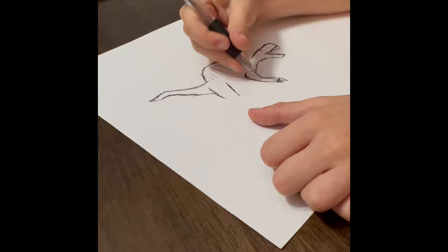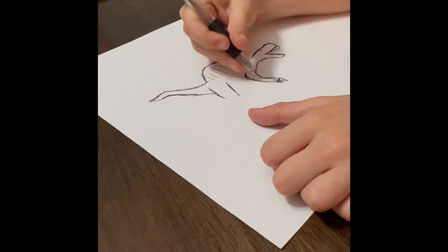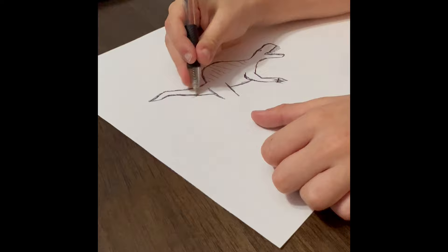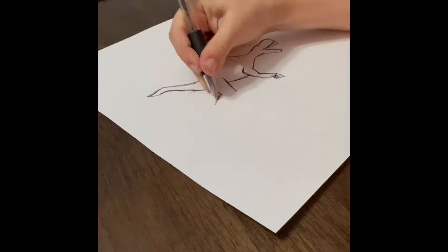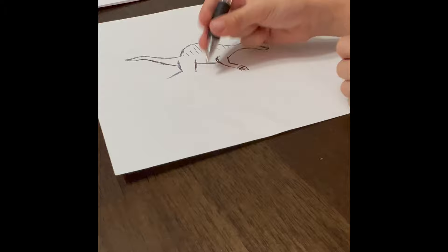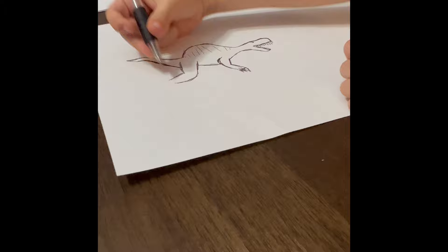And then kind of like this part. Next, you're going to want to make a line kind of going down a little bit. And then going right here. Make sure to make it go to this side.